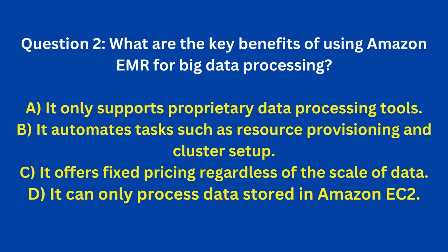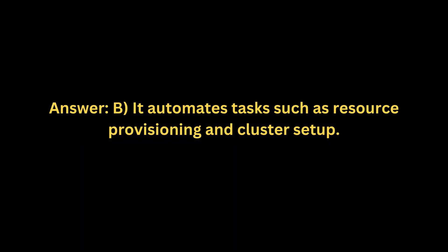Question 2: What are the key benefits of using Amazon EMR for big data processing? A. It only supports proprietary data processing tools. B. It automates tasks such as resource provisioning and cluster setup. C. It offers fixed pricing regardless of the scale of data. D. It can only process data stored in Amazon EC2. Answer: B. It automates tasks such as resource provisioning and cluster setup.